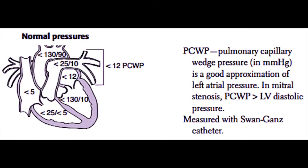This diagram shows the normal pressures in the different chambers of the heart. On the very left side of the diagram is the right atrium, and normal right atrial pressure is between 0 and 5 millimeters of mercury. Remember that means 0 to 5 millimeters of mercury above atmospheric pressure, which is generally approximately 760 millimeters of mercury, or one atmosphere.